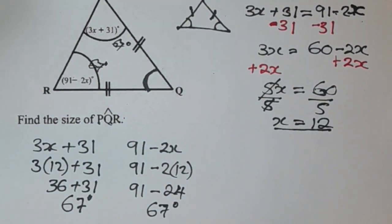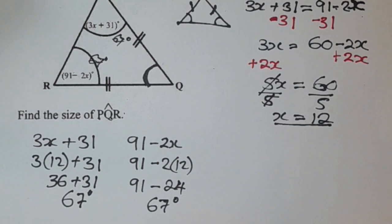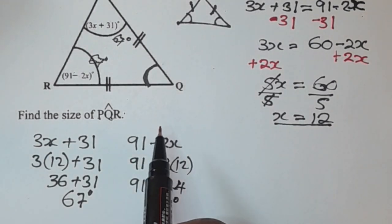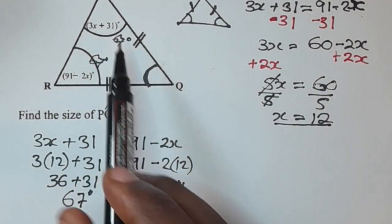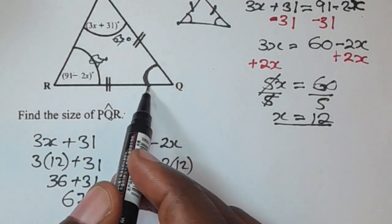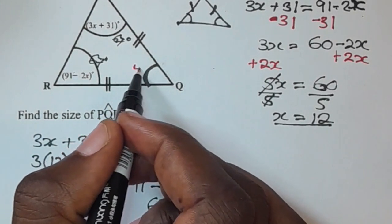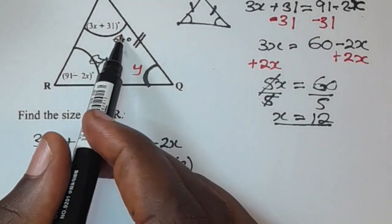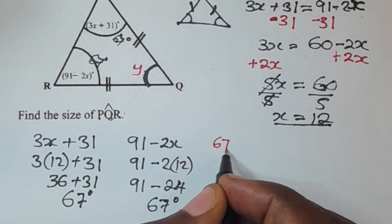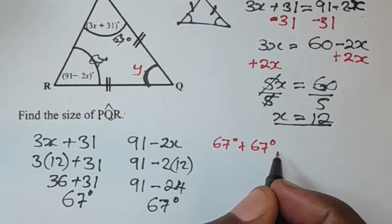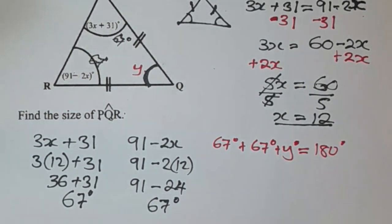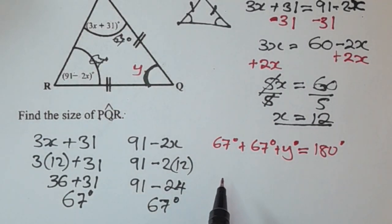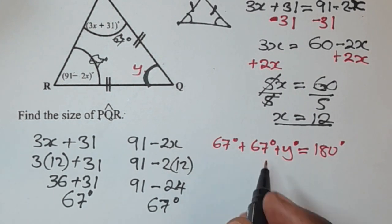To find angle PQR, we use the angle sum property of a triangle — all three angles add up to 180 degrees. Let's call angle PQR as y. So 67 plus 67 plus y equals 180 degrees, because the angles in a triangle add up to 180.